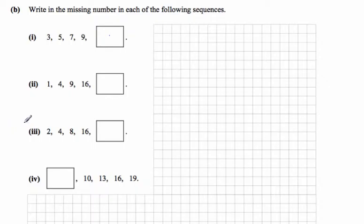Part B of the same question says write in the missing number in each of the following sequences. The first sequence is 3, 5, 7, 9, so we can see that's actually going up in jumps of two each time. So if we continue that pattern from 9, if we jump up two, we've got 11.